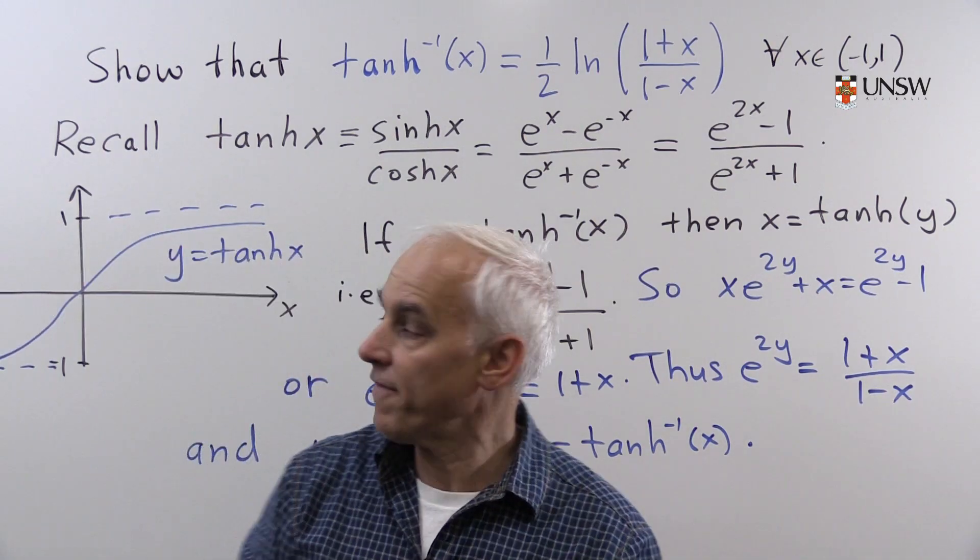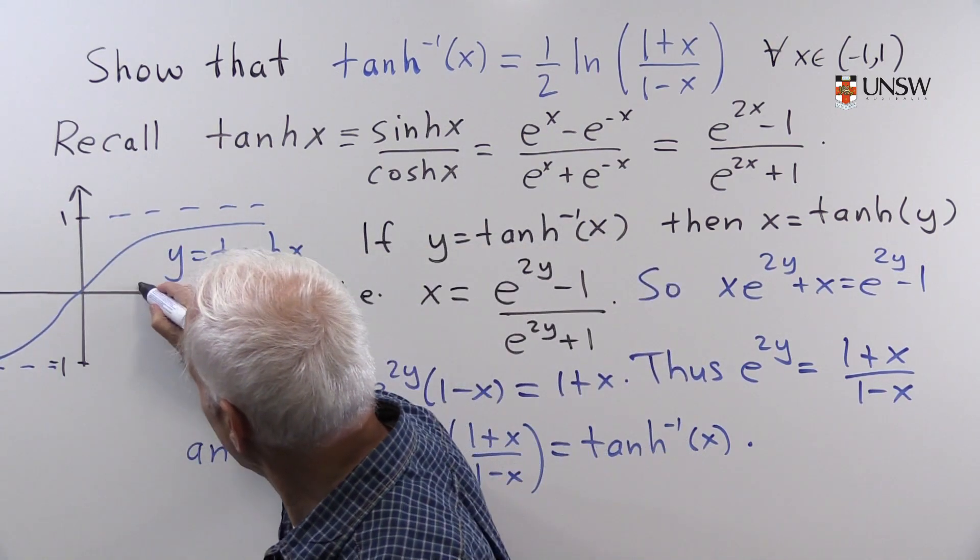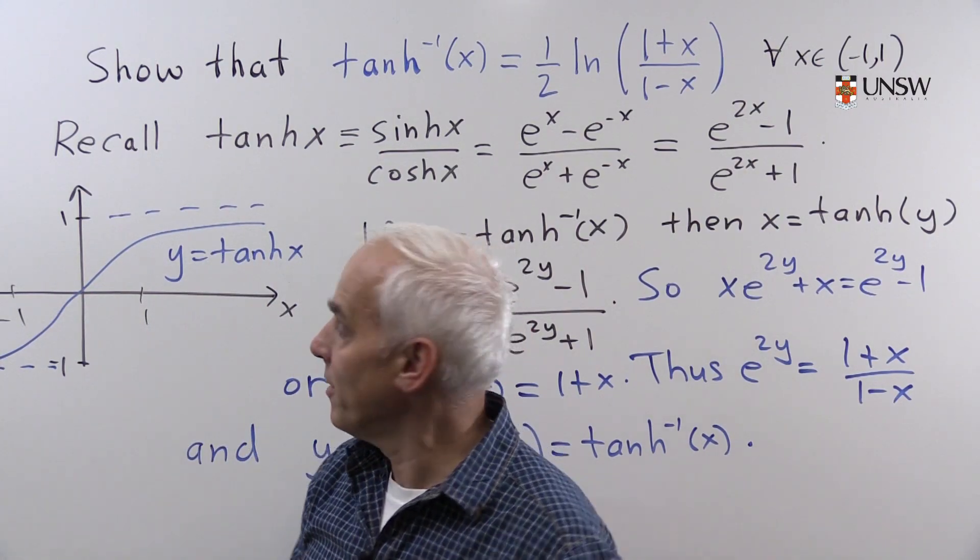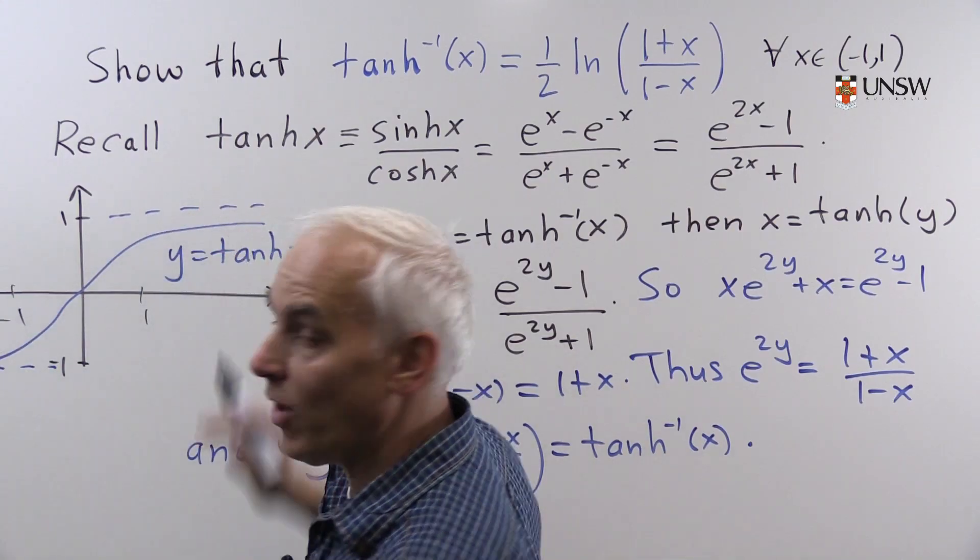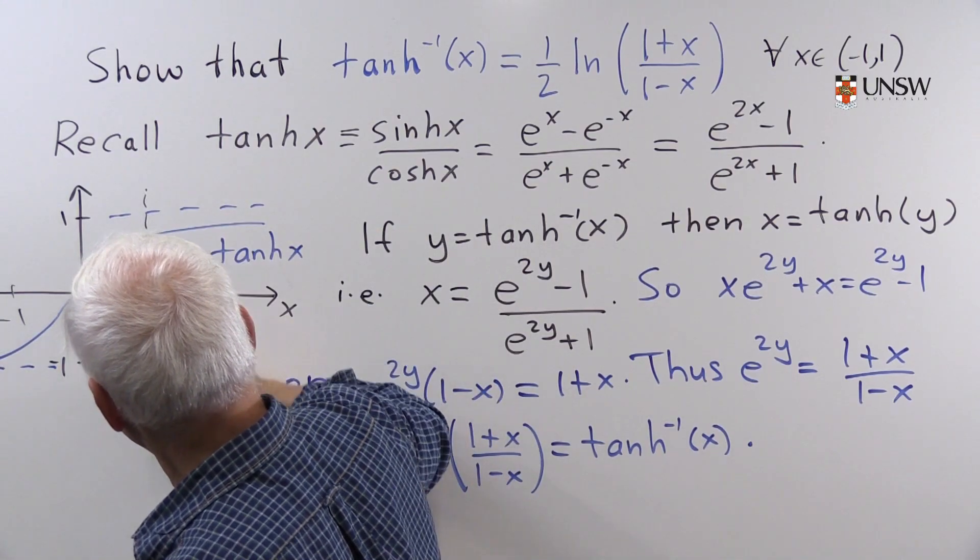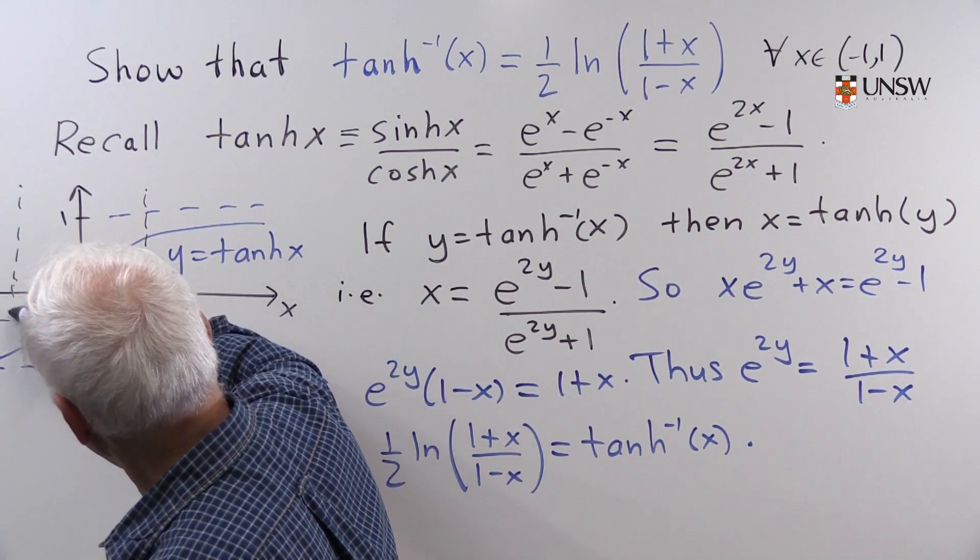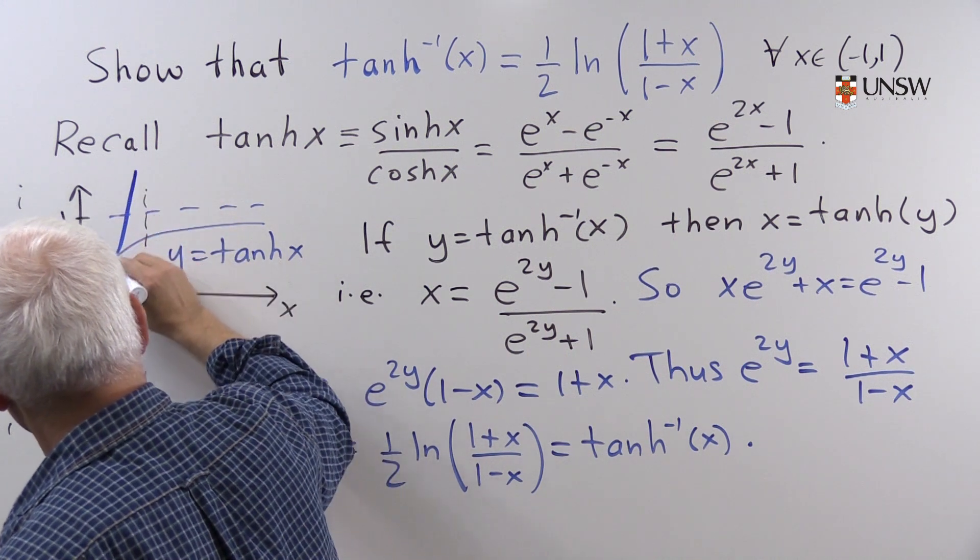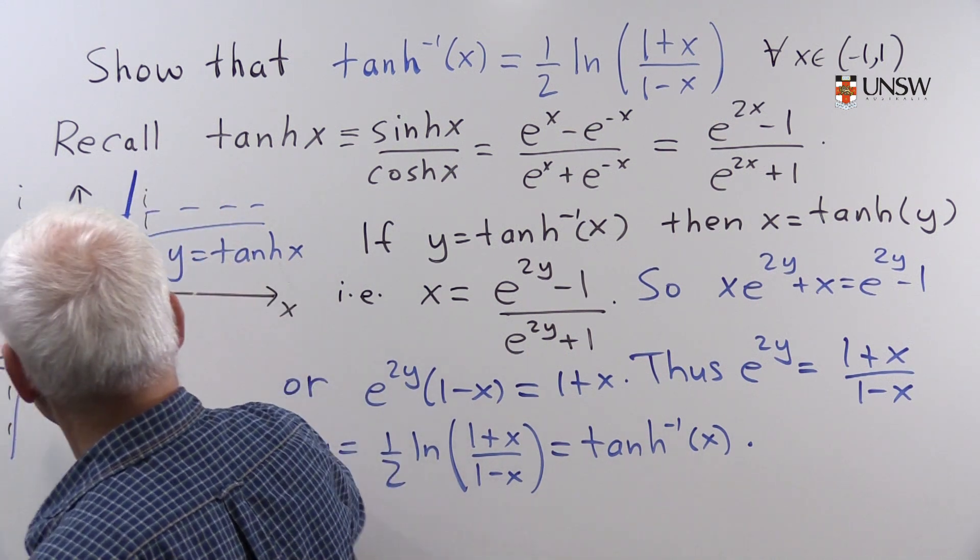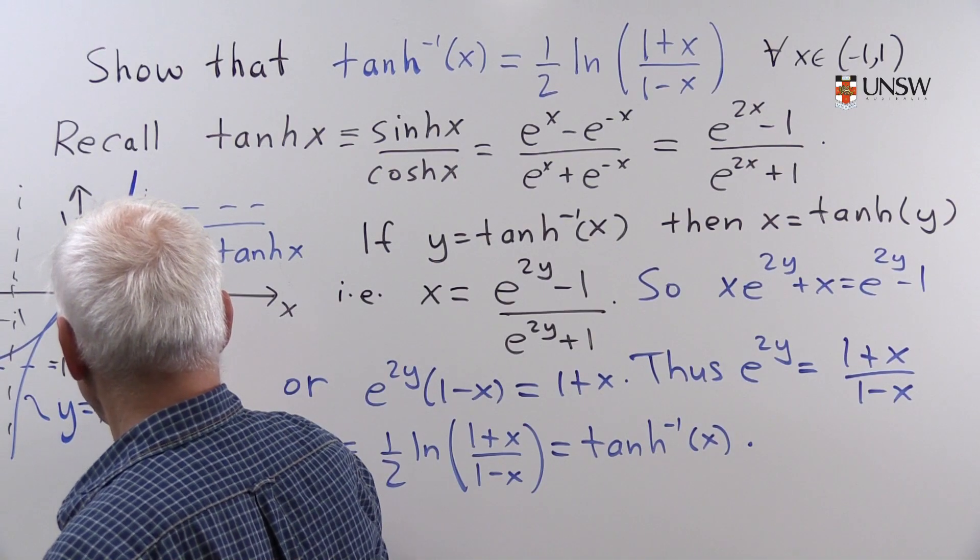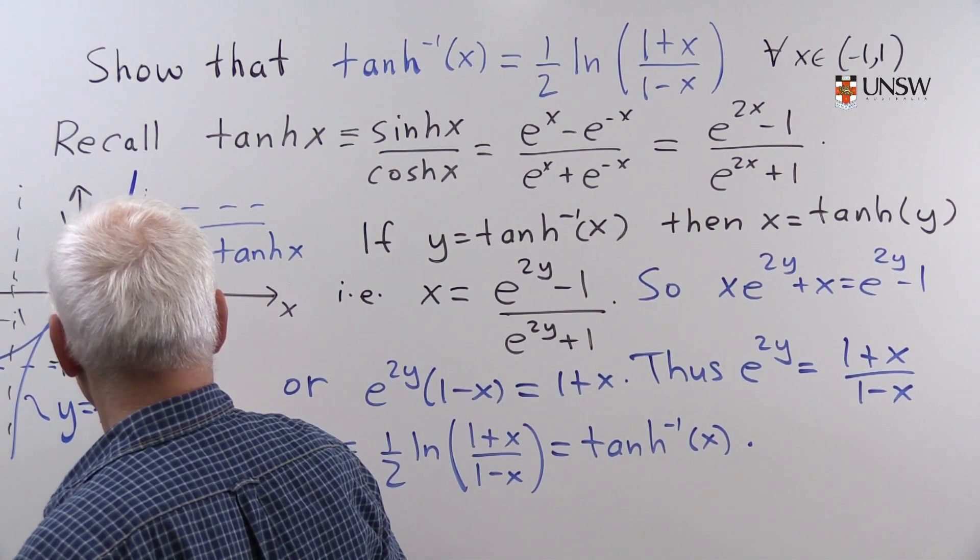In the graph, the inverse function is defined from minus 1 to 1. The reflection of this one in the line y equals x. So we'll have an asymptote at 1 and at minus 1. And it will look something like this. So that would be y equals tanh inverse of x.